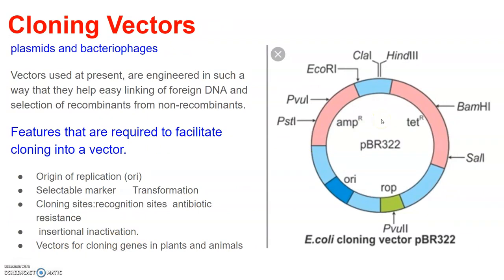The normal E. coli cells do not carry resistance against any of these antibiotics. Third is cloning sites. In order to link the alien DNA, the vector needs to have very few, preferably single, recognition sites for the commonly used restriction enzymes. Presence of more than one recognition site within the vector will generate several fragments, which will complicate the gene cloning. The ligation of the alien DNA is carried out at a restriction site present in one of the two antibiotic resistant genes.